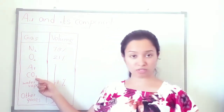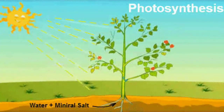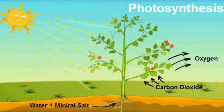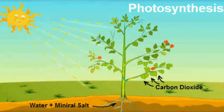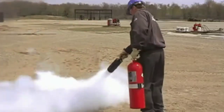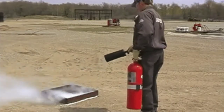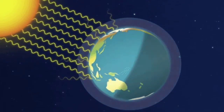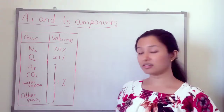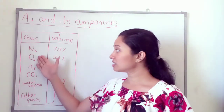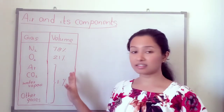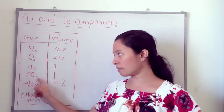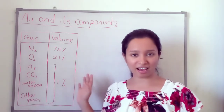Carbon dioxide is the fourth component. It is essential for photosynthesis in green plants. It is also used to extinguish fire and helps maintain the temperature of our Earth. These are the important properties of the gases — nitrogen, oxygen, argon, carbon dioxide, water vapour, and other gases — found in the troposphere.